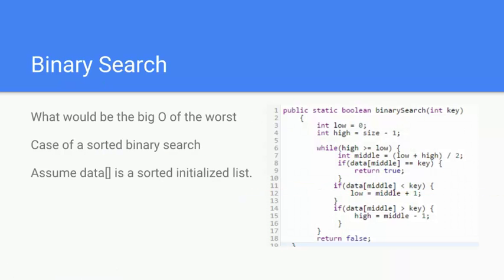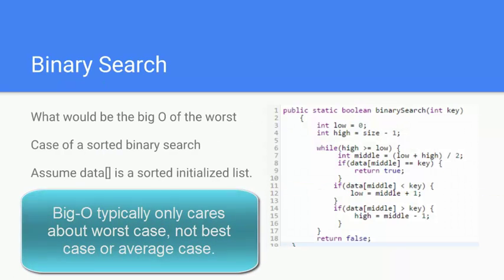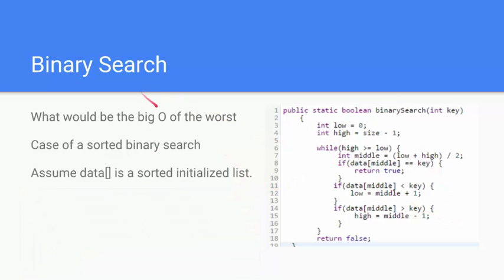Let's try binary search. What would be the big O of a worst case of a sorted binary search? If you don't remember, binary search basically has a sorted list and it splits it in half, checks to see if the value is there and then it checks to see if the middle of the value is greater or less than the value you're searching for. If it's greater than, it goes to the second half of the array. If it's less than, it goes to the first half of the array. It keeps on splitting it in half until it finds the value.